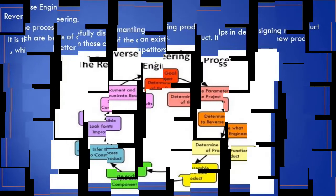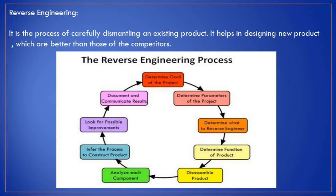The next element is reverse engineering, which means dismantling an existing finalized product. This involves determining the goals and parameters of the project, what angles and sizes are being used, determining what to reverse engineer in the product, determining the function of the product and how it will be used by customers, and then disassembling the existing product and analyzing each component.